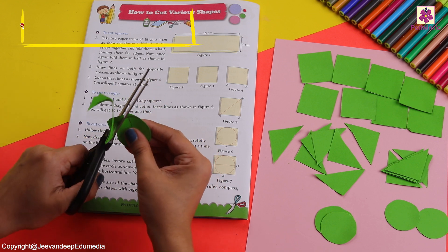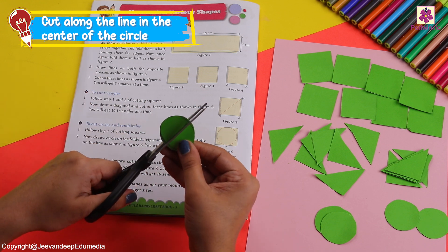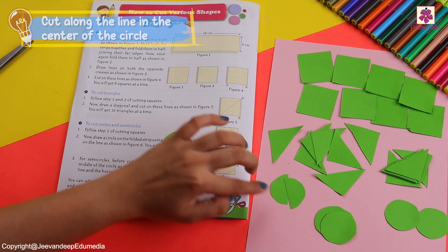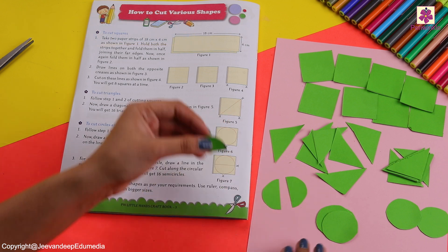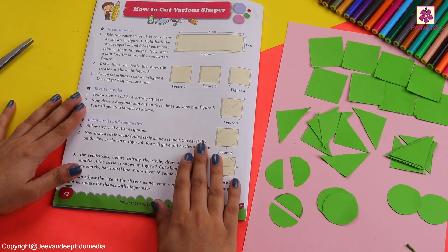After that, let's cut it on the center line and if you do so you will get 16 such pieces. This was so much fun cutting various shapes.